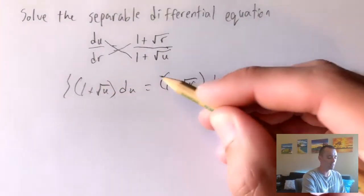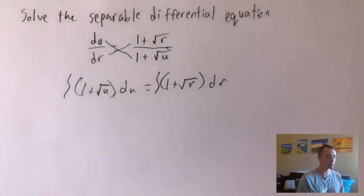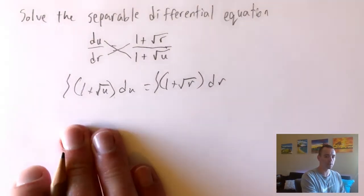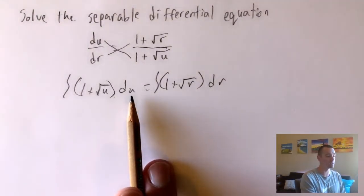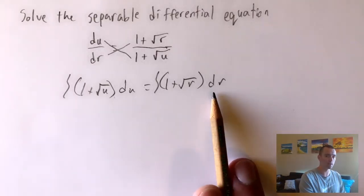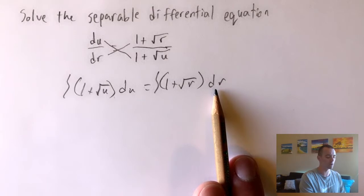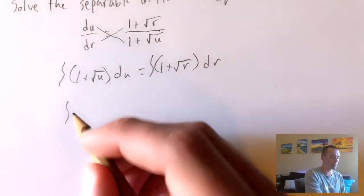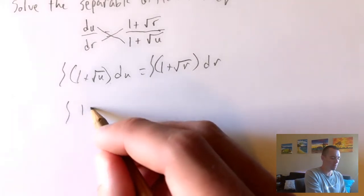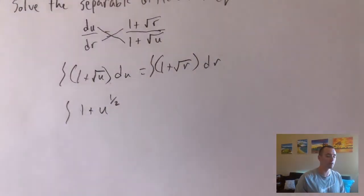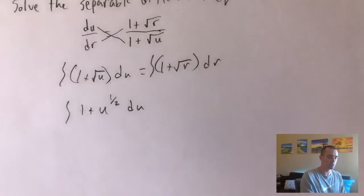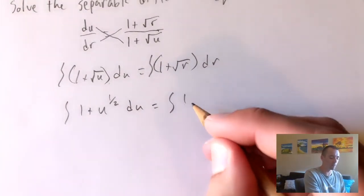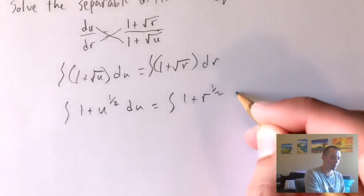Now what we want to do is integrate both sides — we just add the integral sign to both sides of our equation. We have the function on the left side that we integrate with respect to u, and the function on the right side that we integrate with respect to r. Before we actually integrate, I would recommend rewriting the square root as a power. So we get the integral of (1 plus u to the one-half) du on the left, and the integral of (1 plus r to the one-half) dr on the right.